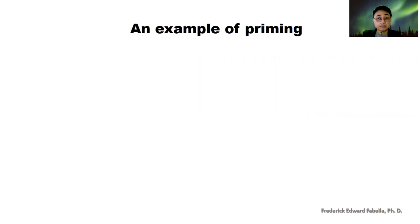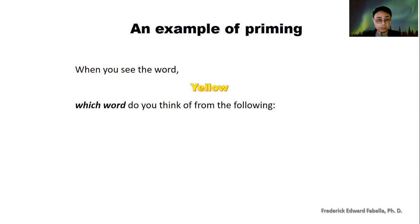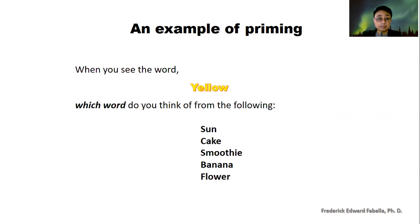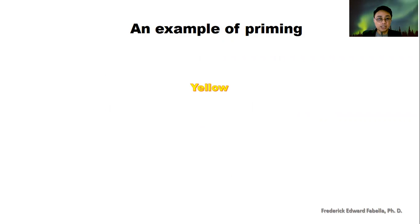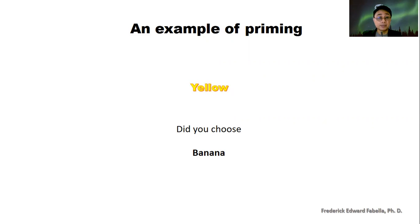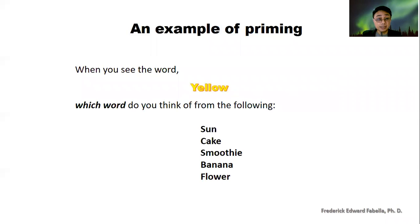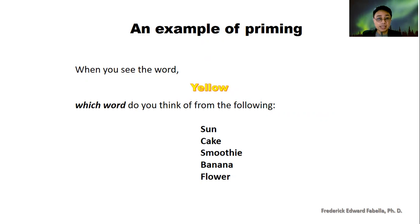I'll give you an example of priming. When you see the word yellow, which word do you think of from the following? I will be showing you five words, so choose just one. So the word yellow — did you choose banana? That is an example of priming. You probably chose banana because you thought that it was yellow. But if you go back to the list, the sun is also yellow, there is a cheesecake that is also yellow, smoothies can be yellow, and the sunflower is also yellow. But you chose banana — that is an example of priming.